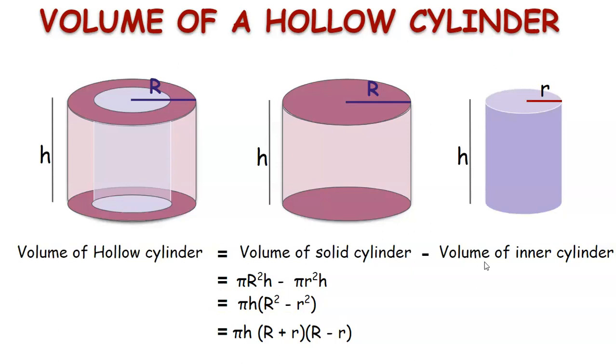Therefore, the volume of the hollow cylinder is pi h into capital R square minus small r square.